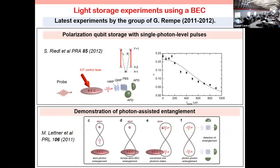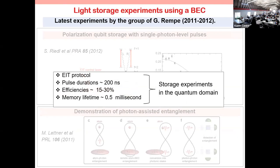Between 2011 and 2012, Gerhard Rempe's group at Max Planck Institute also demonstrated BEC memory. They showed they can store polarization qubits in BEC with very large fidelities, and demonstrated entanglement between a BEC and a single atom by means of photons. Everything was in the truly quantum domain. They used the EIT protocol; pulse durations were a little bit shorter — on the order of fractions of microseconds — efficiency around 15% with a claim up to 30%, and memory lifetime of about 0.5 milliseconds.